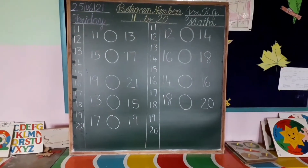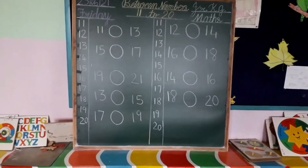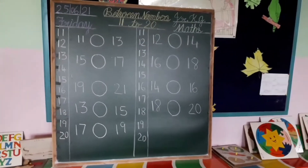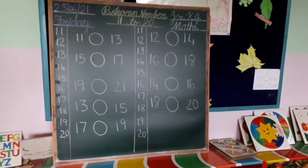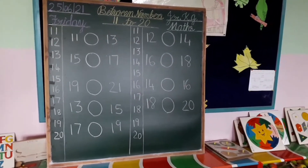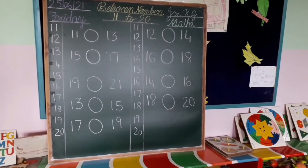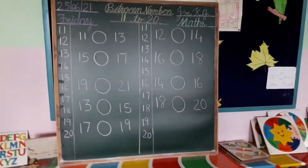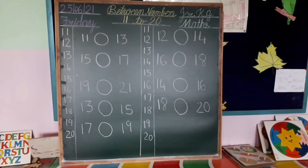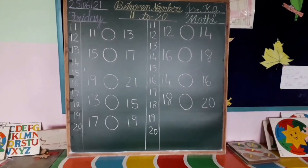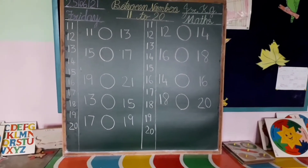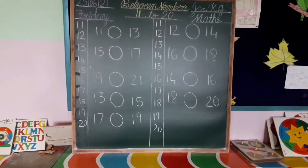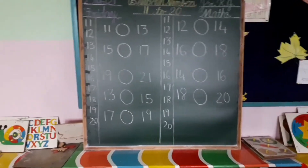Good morning children. How are you all? I hope you all are safe and fine at your home. Today I will teach you subject maths, class Junior KG, between numbers 11 to 20. So now, ready?